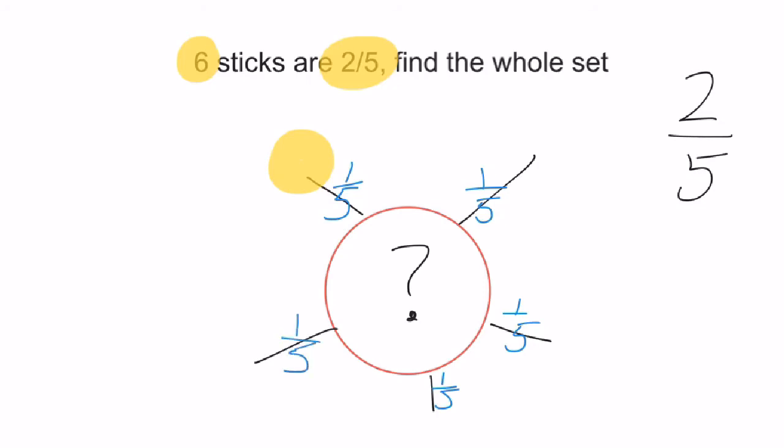So 6 is not just this. 6 is actually 2 of these together because it is 2 fifths of the set. So this chunk and this chunk together equals 6.